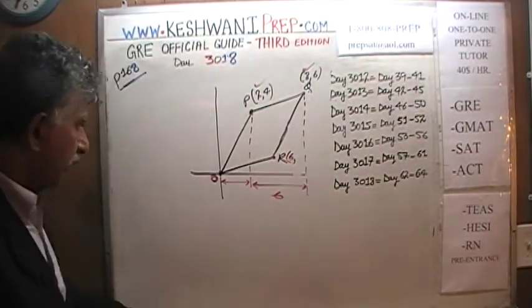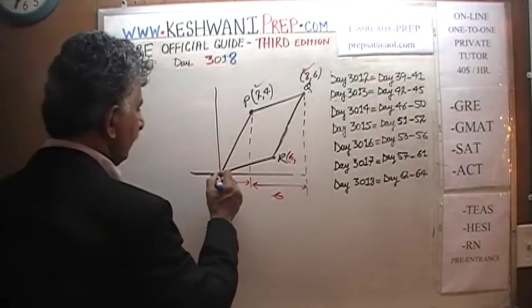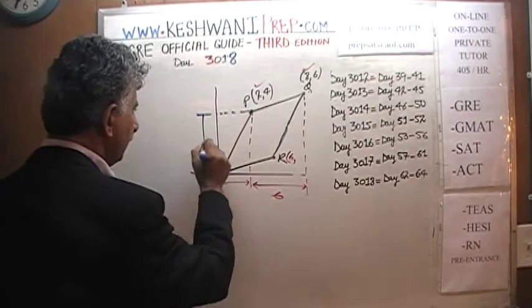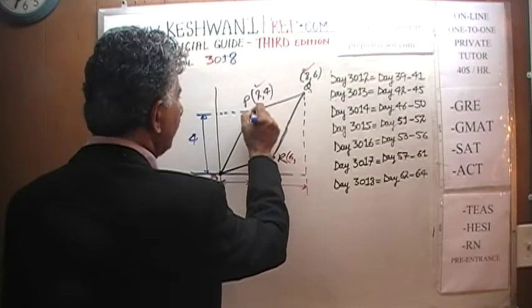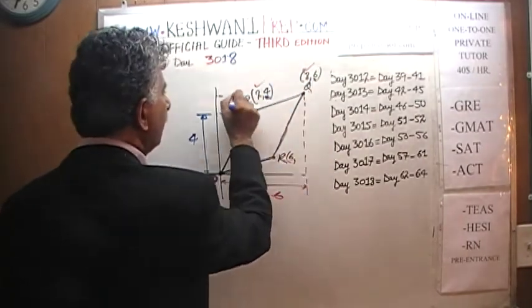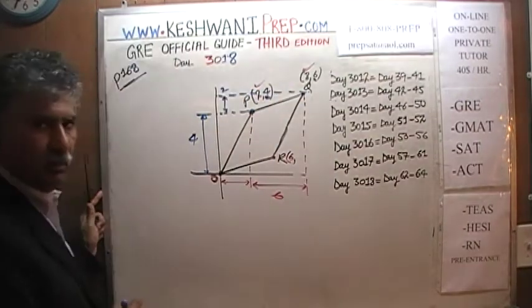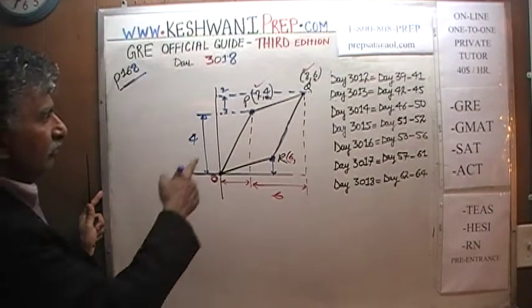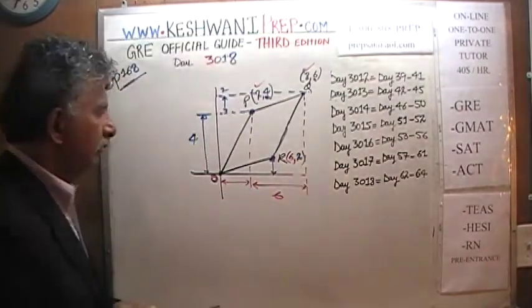Now let's work on the y-coordinate. We know the vertical distance from O to P is 4. The vertical distance from P to Q is 6 minus 4 = 2. By the parallelogram property, the vertical distance from O to R must also be 2. So the y-coordinate of R is 2. The coordinates of R are (6, 2).